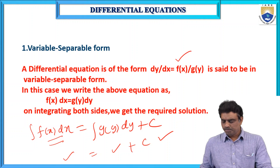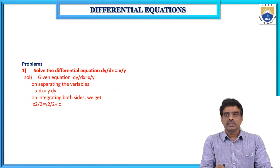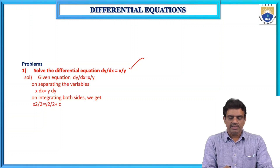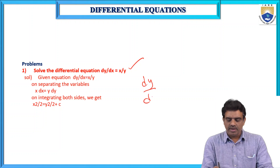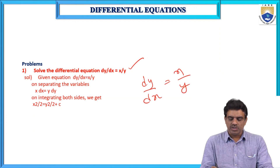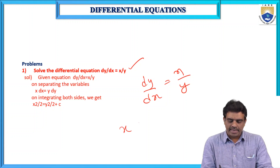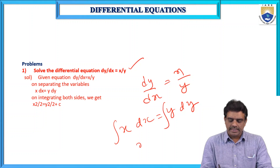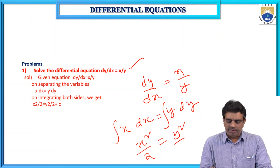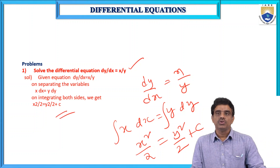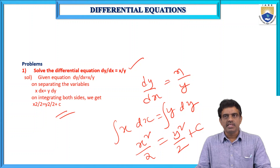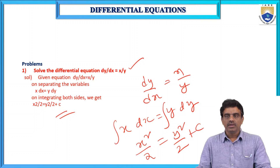For example, if the equation is dy/dx = x/y. The given equation is dy/dx = x/y. On separating the variables and cross-multiplying, x dx = y dy. On integrating both sides, x²/2 = y²/2 + c — integrating with respect to y — and this is the required solution. Very simple method. If it is possible to separate the variables, the problem comes under variable separable form, and on integrating, we get the solution.